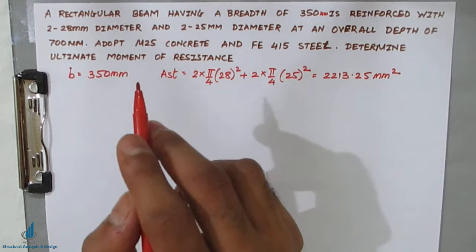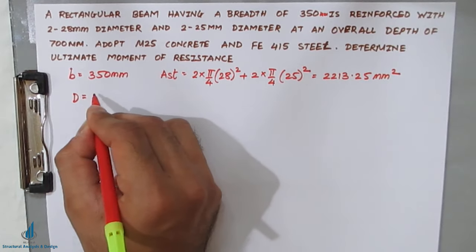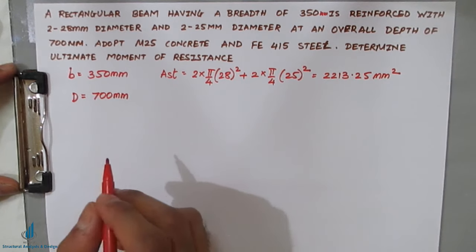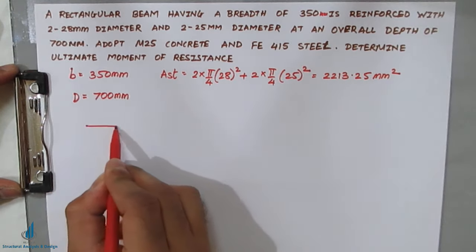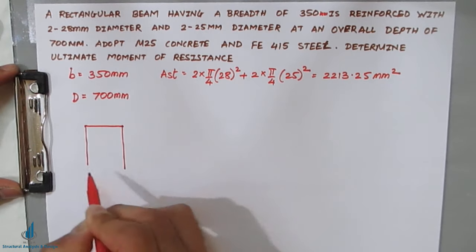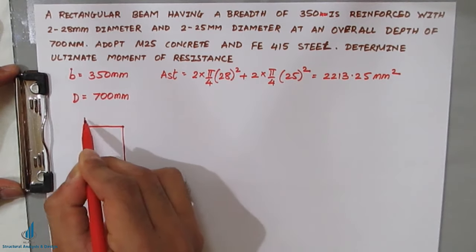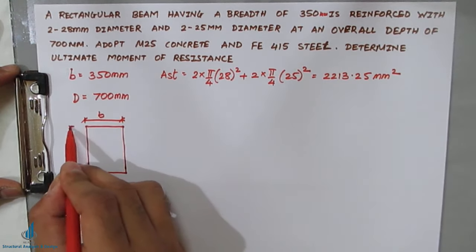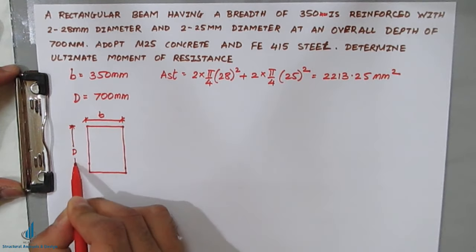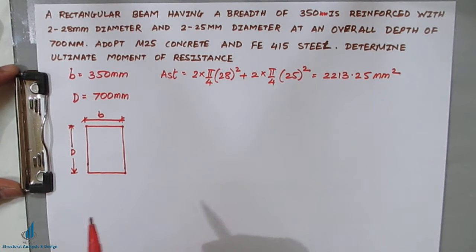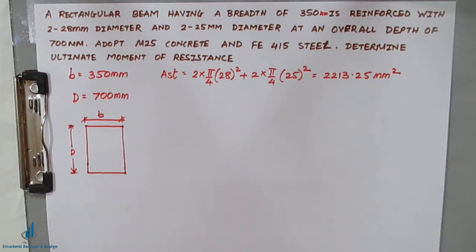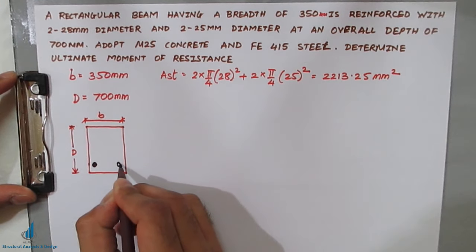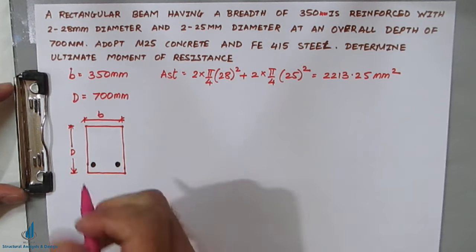The next given data is overall depth D = 700 mm. Let me explain the types of depth you will encounter in this RCC chapter. The cross-section has a width of 350 mm. The overall depth is shown, and the reinforcement consists of two bars of 28 mm diameter and two bars of 25 mm diameter placed in the tension zone.